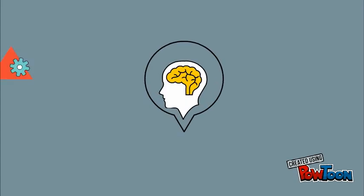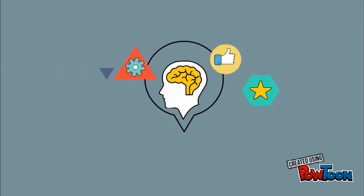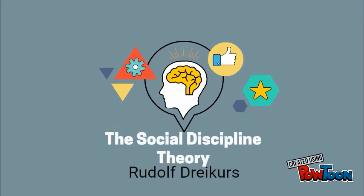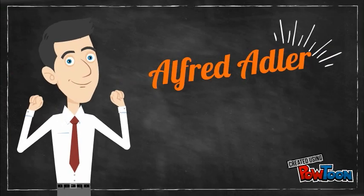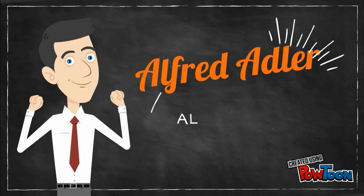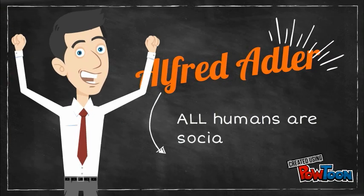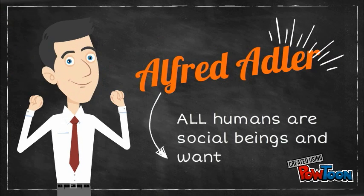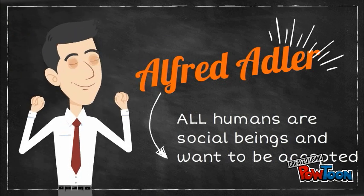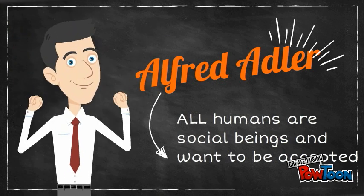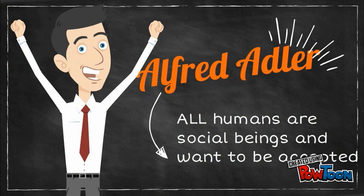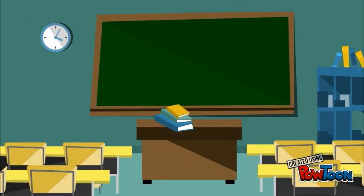The Social Discipline Theory by Rudolf Dreikers. Dreikers was highly influenced by social psychologist Alfred Adler. Adler believed that every human wants to belong and feel accepted by others, and he held the belief that all humans are social beings.